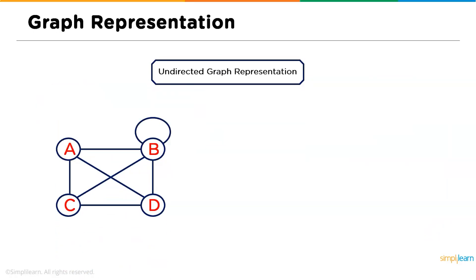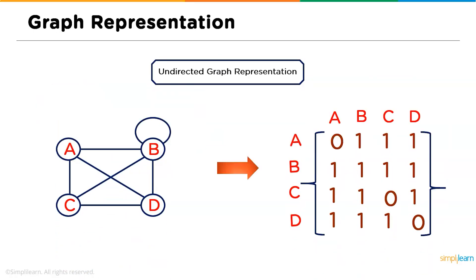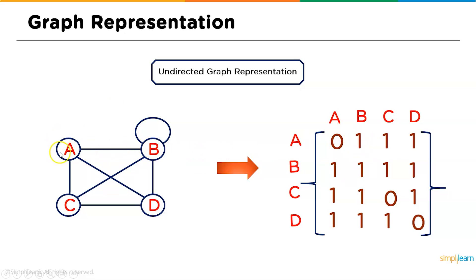Now, undirected graph representation using adjacency matrix. There is no connection between A to A — that is, no loop — so the value will be zero. Since we do not have a weighted graph here, no connection is represented as zero and a connection is represented as one. We have a connection from A to B, so we represent it as one, and similarly A to C, and so on.